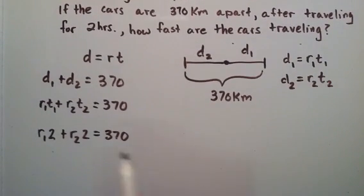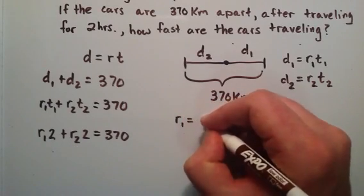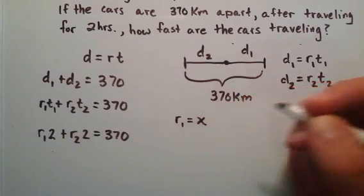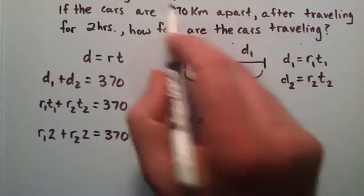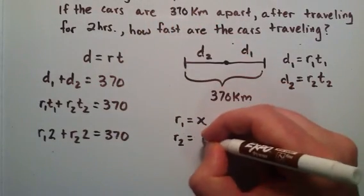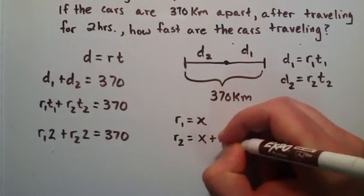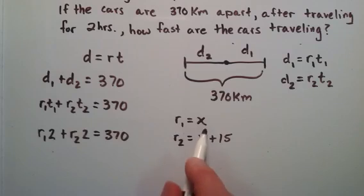Now we need to relate r1 and r2 in terms of the same variable. We'll say that r1 equals x, the rate that car one is traveling at. And we'll say that car two is traveling at 15 kilometers faster than car one, so he's going to be traveling the same rate as car one plus the extra 15 kilometers per hour.